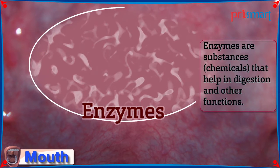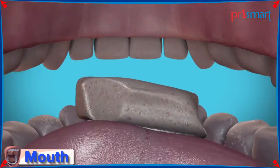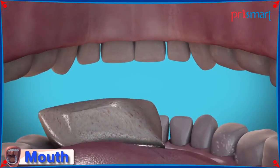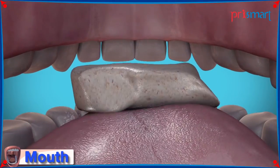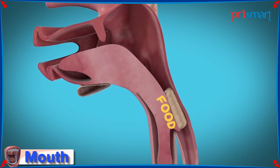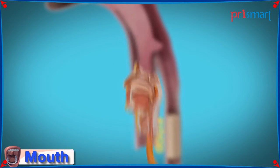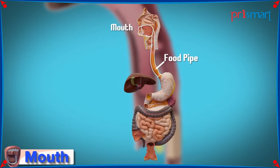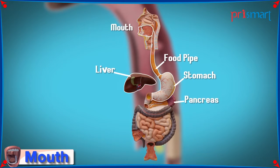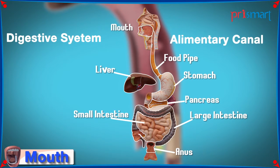Enzymes are substances — chemicals that help in digestion and other functions. The tongue not only tastes the food but also helps in swallowing of the chewed food. The chewed food is pushed into the food pipe, also called the esophagus or gullet. The mouth, food pipe, stomach, liver, pancreas, small intestine, large intestine, and anus together form the digestive system or the alimentary canal.